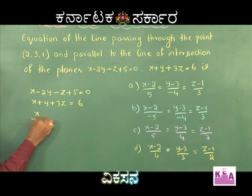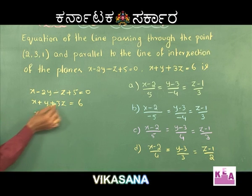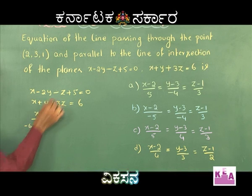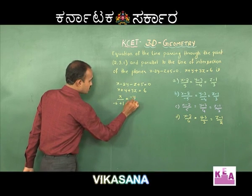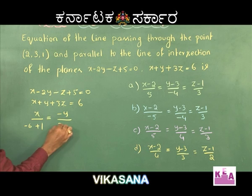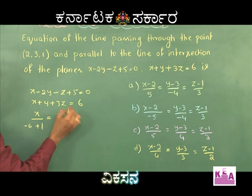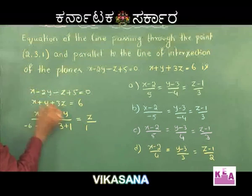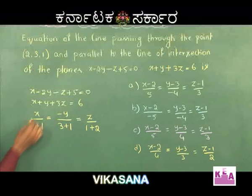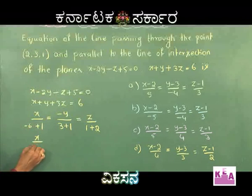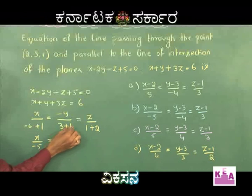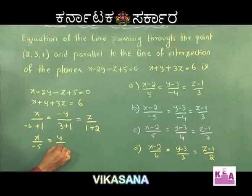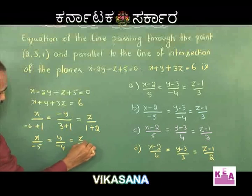Using the cross-product property: x / (3·(−2) − 1·(−1)) = x / (−6 + 1) = x / (−5); minus y / (1·3 − (−1)·1) = −y / (3 + 1) = −y / 4; z / (1·1 − (−1)·2) = z / (1 + 2) = z / 3. So x/(−5) = −y/4 = z/3, giving direction ratios (−5, −4, 3).